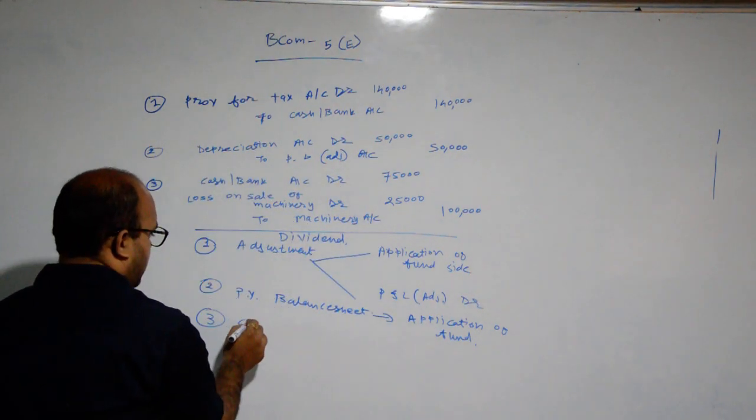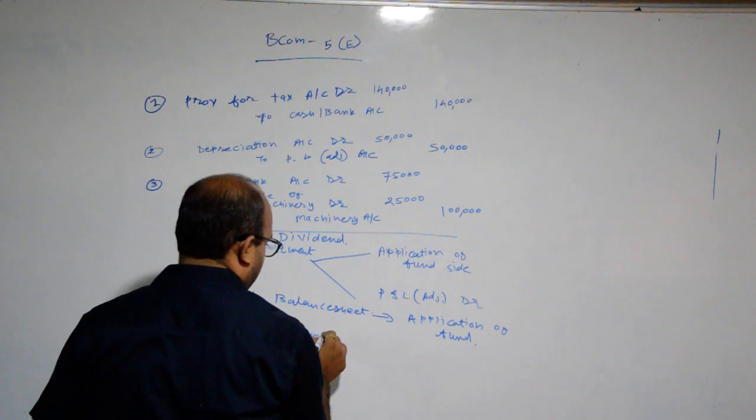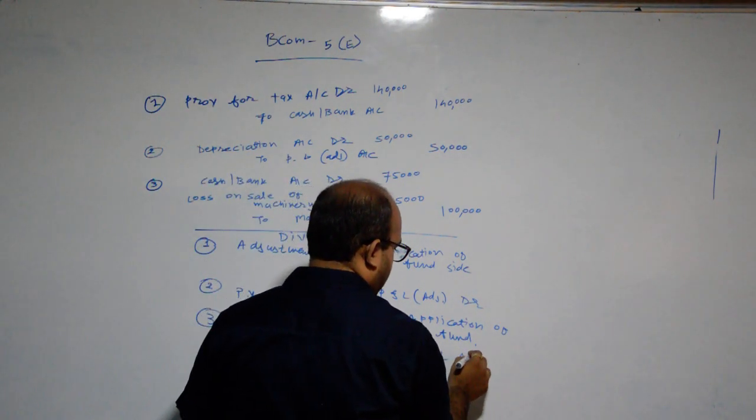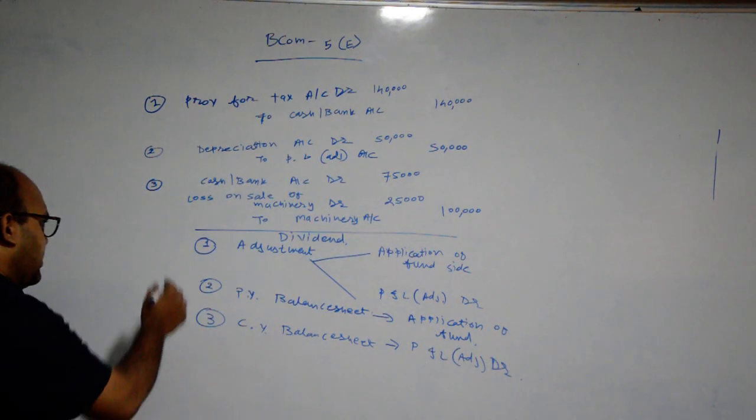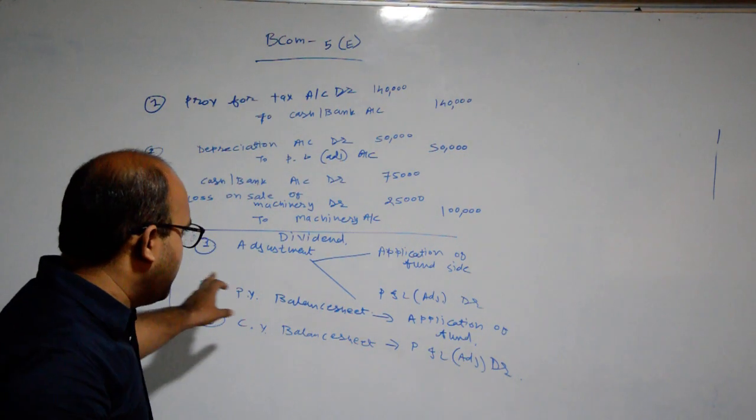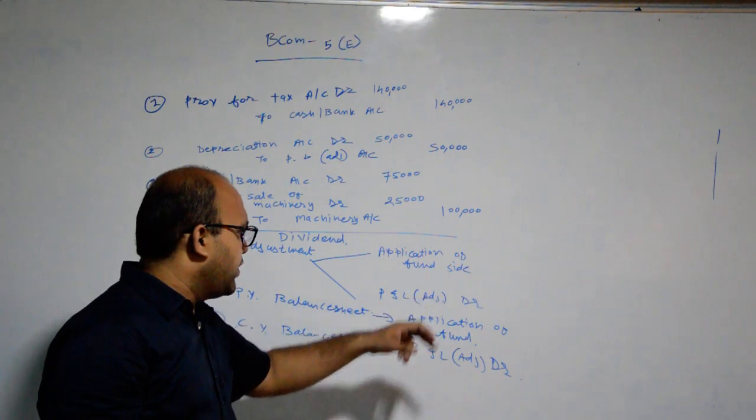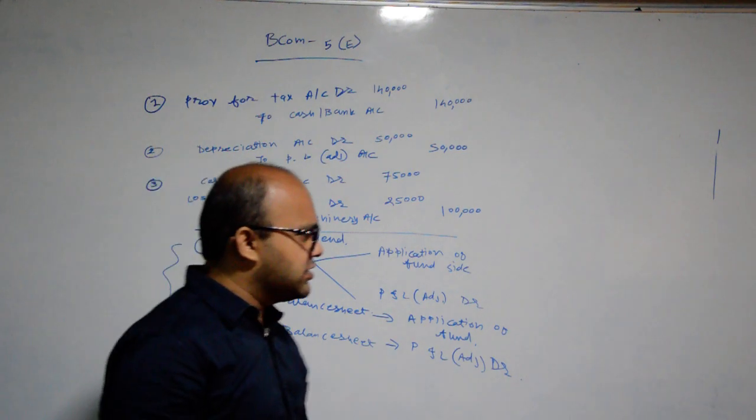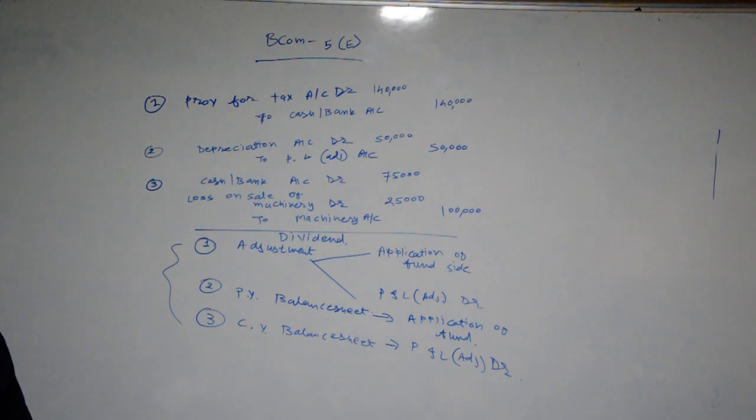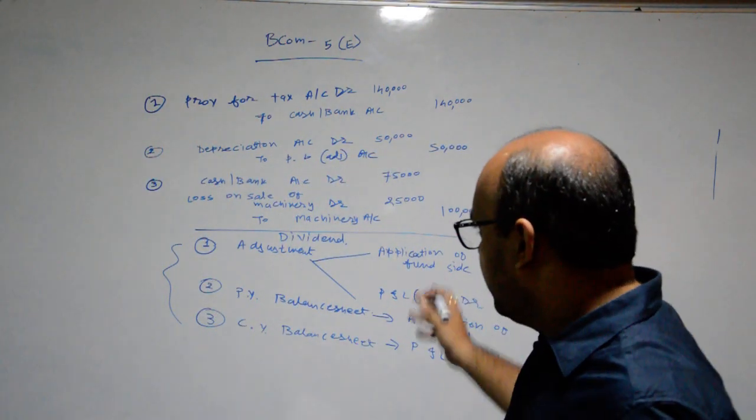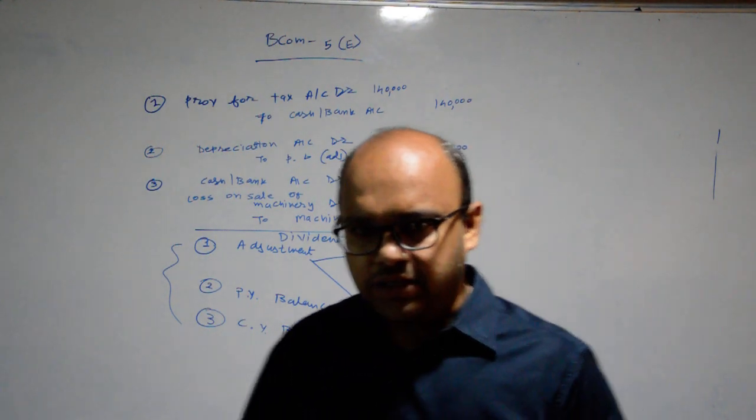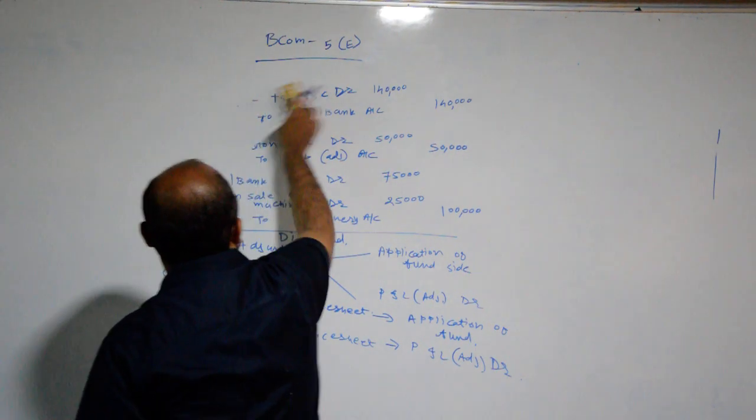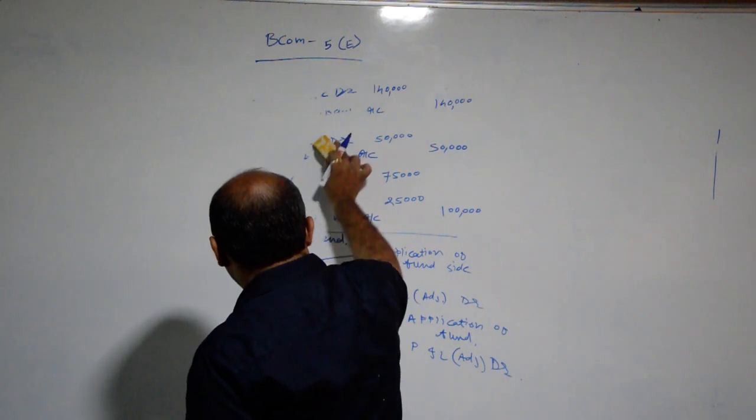Third, current year balance sheet. Current year effect P&L Adjustment debit. Dividend effects: application of fund side, profit and loss adjustment account debit side. Second, previous year balance sheet application of fund side. Current year balance sheet P&L adjustment debit side. Students, general entry and dividend effects covered. Next sum.